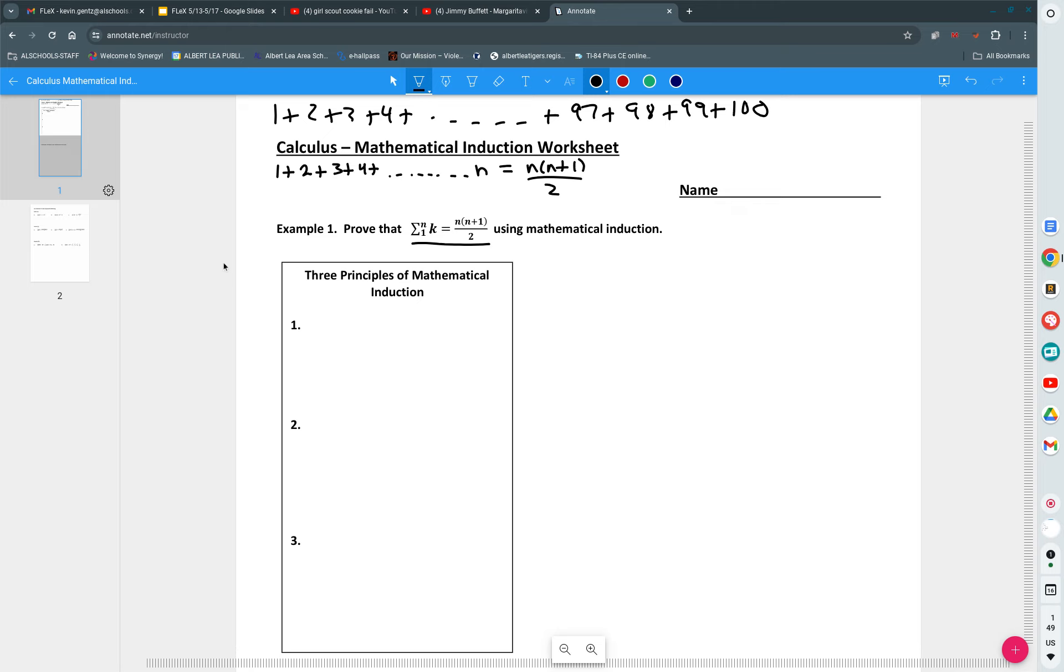We want to prove that rule to be true, not just for 100, but say we were to add up a million or a billion or a googol. Does the rule still hold true? The three principles of mathematical induction start with this one. Show the rule holds true for the first few cases. Some people don't like that. How many cases do we have to show?